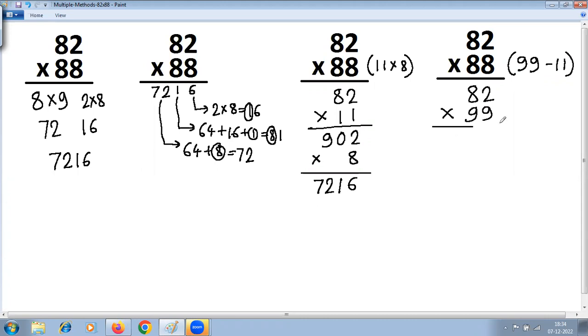The first step is 1 less: 82 minus 1 is 81. Second step: subtract all from 9 and last from 10. 9 minus 8 is 1, and last from 10: 10 minus 2 is 8. So this is the answer of 82 multiplied by 99.